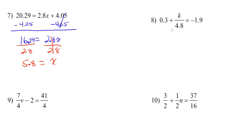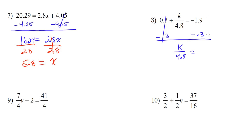Number 8: 0.3 plus k over 4.8 equals negative 1.9. Step 1, undo addition and subtraction. We have to get rid of this positive 0.3 by subtracting 0.3 on both sides. On the left, they cancel out, leaving us with k over 4.8. And on the right, negative 1.9 minus 0.3 — same sign, add them together and keep the sign — this becomes negative 2.2. Finally, we have to undo division by positive 4.8, so we're going to multiply both sides by 4.8. On the left they cancel out, and negative 2.2 times positive 4.8 equals negative 10.56.